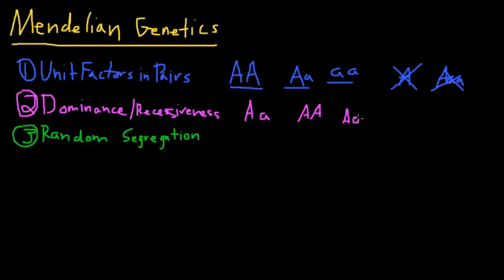If I have a capital and a lowercase, I'll still have black hair, because this dominant allele is going to overshadow the recessive one. And the only case when I'll have brown hair is if I have two of the recessive allele, because then there's nothing to overshadow it.